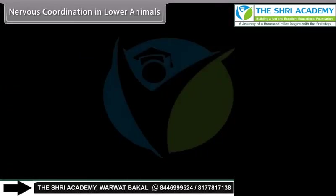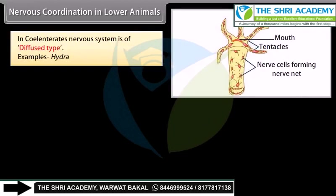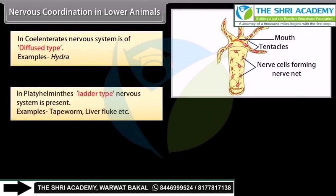In coelenterates, the nervous system is of a diffused type; example: hydra. In platyhelminthes, a ladder type nervous system is present; examples include tapeworm and liver fluke.